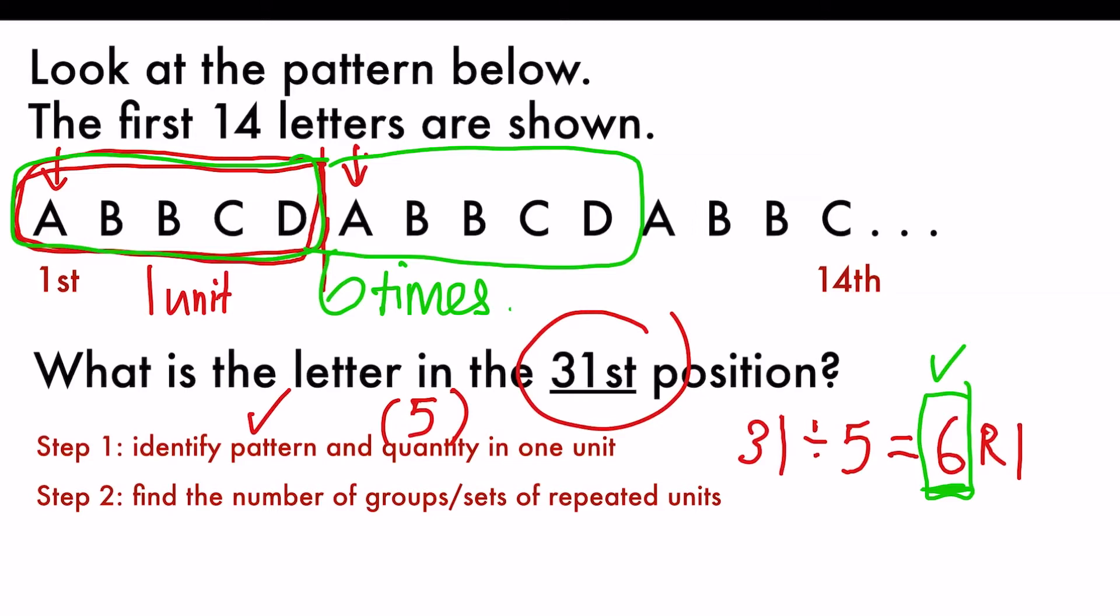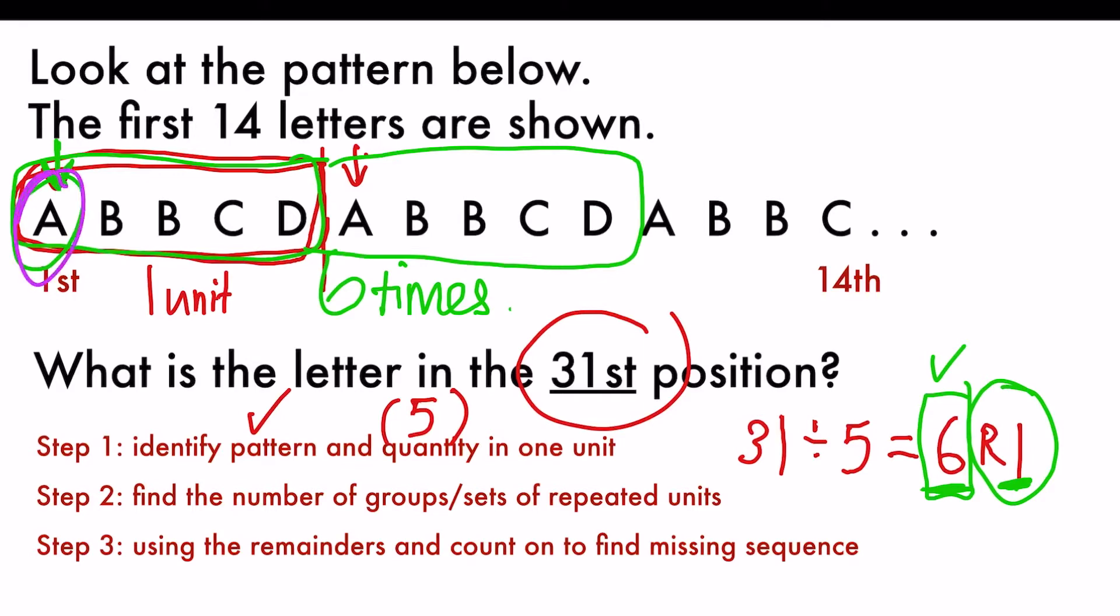The last step. Then what do I do with the remainder? So we will use the remainder and count on to find the missing sequence. You will find that the number is much, much smaller now. And it's easier to count on. So my remainder is 1. So I go back to the basic unit, which is A. And I count 1. So my answer is A. This is a pretty easy question and the number is small.